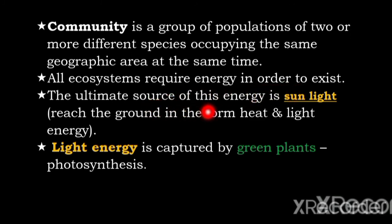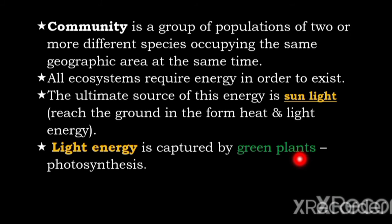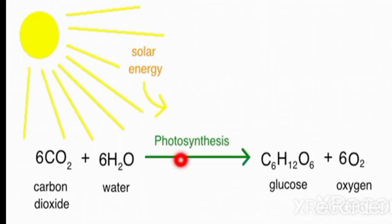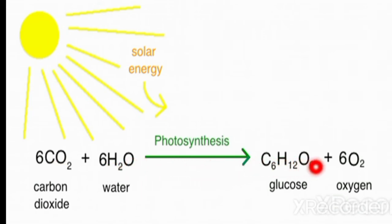All ecosystems require energy in order to exist. The ultimate source of this energy is sunlight. Sunlight reaches the ground in the form of heat and light energy, but the light energy is captured by green plants for photosynthesis, or for making food. The photosynthesis equation is: six carbon dioxide plus six molecules of water gives glucose plus oxygen. So plants produce food by this process of photosynthesis.